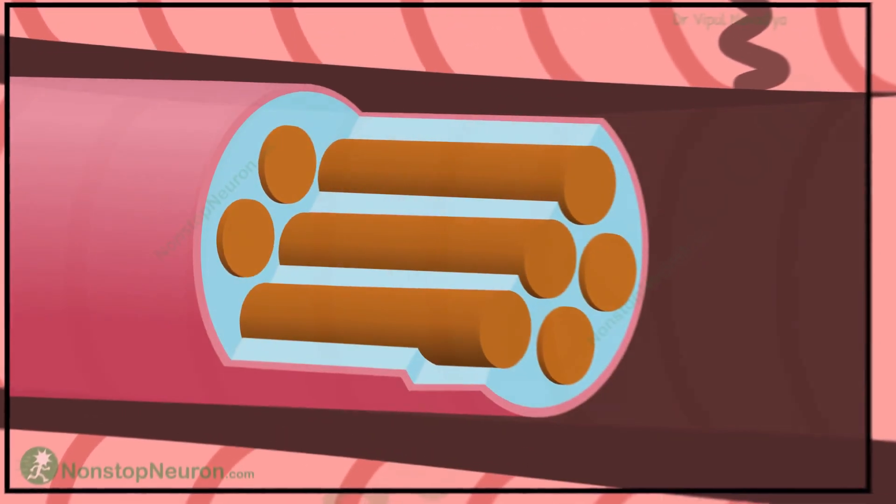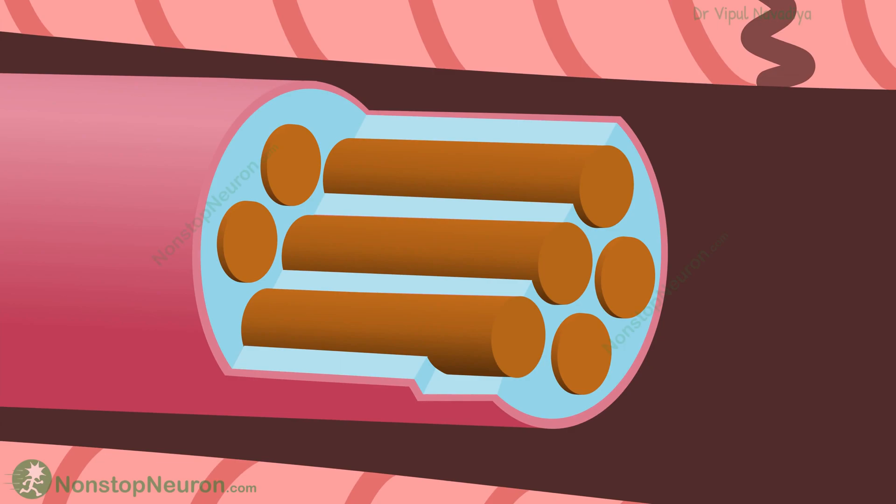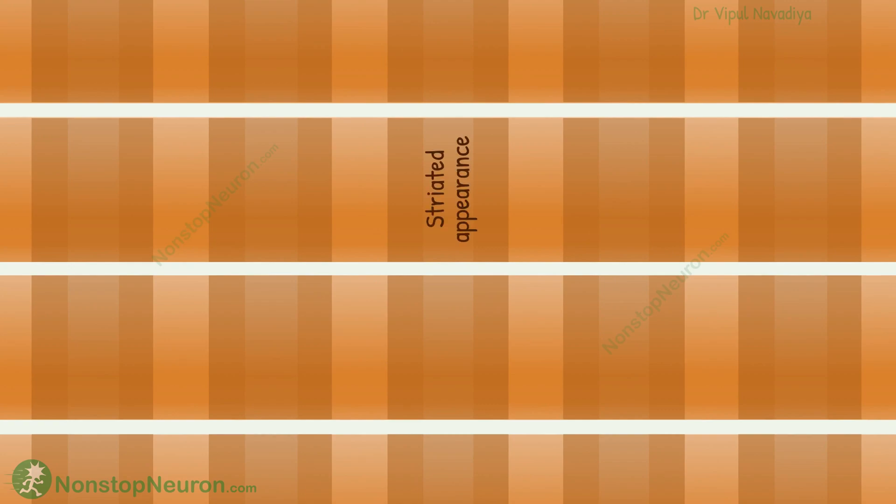If we look inside each cell, we can find many similarities between cardiac muscle and skeletal muscle. Inside the cardiac myocyte, there are multiple myofibrils. These myofibrils contain similar contractile filaments — actin and myosin — arranged in a highly organized fashion, so cardiac muscles also have a striated appearance.